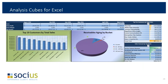This next slide is a quick example of charts, graphs, and pivot tables that can be generated in Analysis Cubes — a top 10 customers by total sales driving a chart, a sales forecast by top items, an aging bucket graph, and a pivot table showing sales, gross margin, and net income by month.